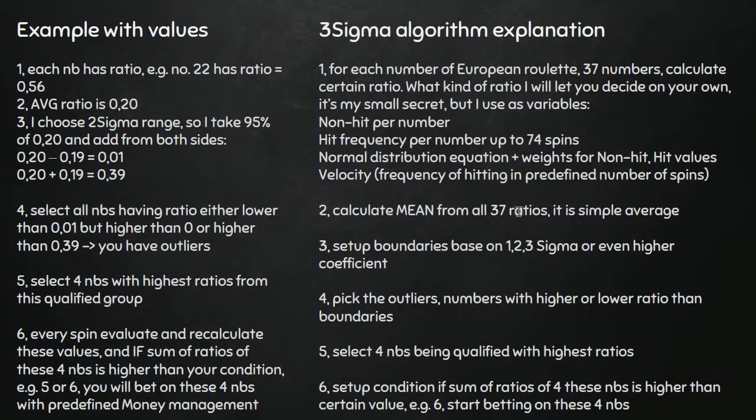I also use velocity from time to time. For example, if one number is hitting every 10 spins and you've generated 40 spins total, that number has an overall hit frequency of 4, hitting exactly once every 10 spins — so my velocity is 10 spins. If a number is coming so frequently and so exactly within a range of 10 spins, you can play with it, and I use this variable for my ratio calculation per number.